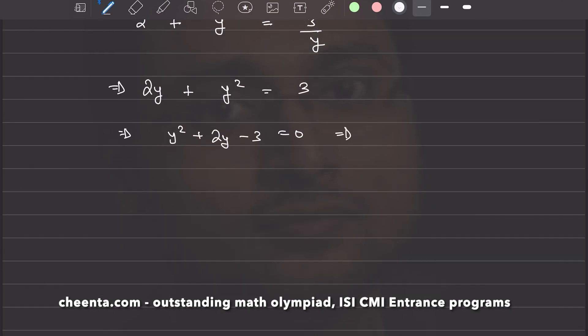Which means we can now factorize this: y minus 1 times y plus 3 equal to 0. So, that means y is equals to 1 or y is equals to negative 3. We have two solutions.